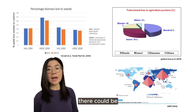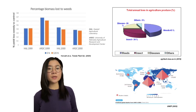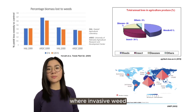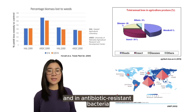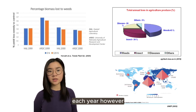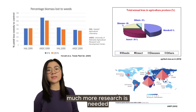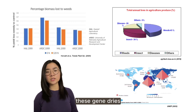Beyond mosquitoes, there could be applications for gene drives in other areas. Some major ones include in agriculture, where invasive weed species hamper crop yields, and in antibiotic-resistant bacteria, which claim hundreds of thousands of lives each year. However, much more research is needed before we consider releasing these gene drives.